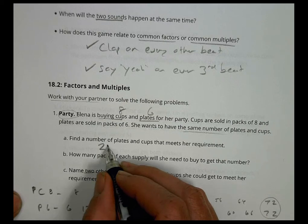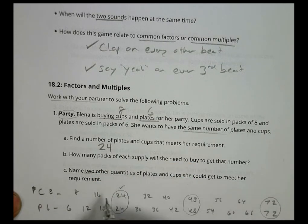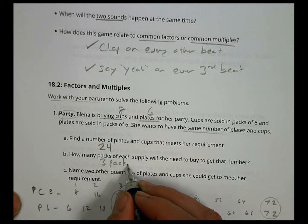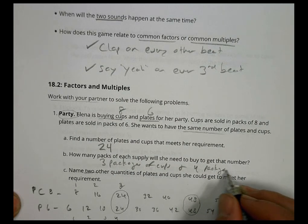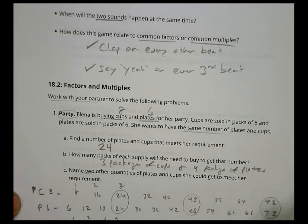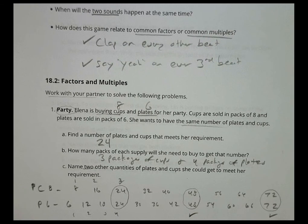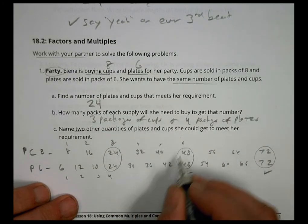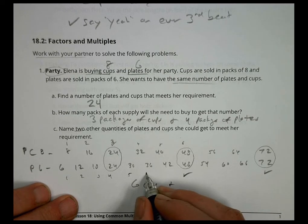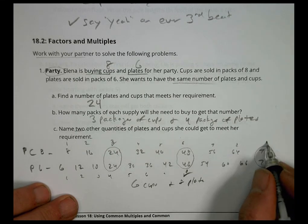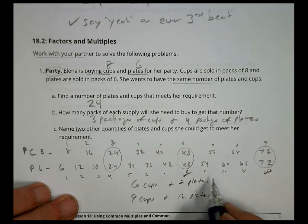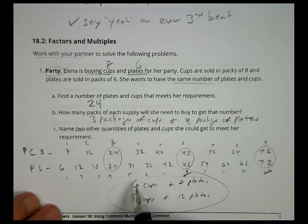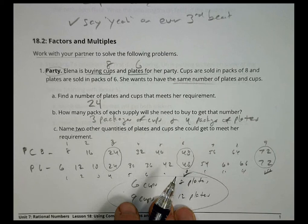With 24 plates and cups, she would need 3 packages of cups (8×3=24) and 4 packages of plates (6×4=24). Other quantities that work are 48 — which is 6 packs of cups and 8 packs of plates — and 72, which is 9 packs of cups and 12 packs of plates. So the package counts are 3, 6, 9 for cups and 4, 8, 12 for plates.